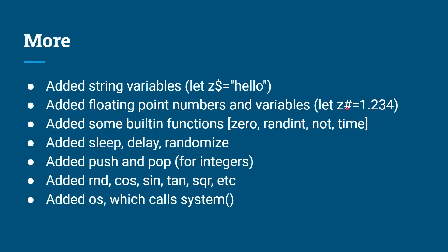After that I started getting into it. I added string variables — LET Z$ = "hello". I added floating point numbers — Z# = 1.234. I added some built-in functions: zero, random integer, not, time, plus others like sleep, delay, randomize. I put in a stack system with PUSH and POP, mathematical functions like cosine, sine, and square root, and even an OS call that calls the system() function in C. The interpreter has built up quite significantly, and adding new built-in functions is just a matter of coding them in.